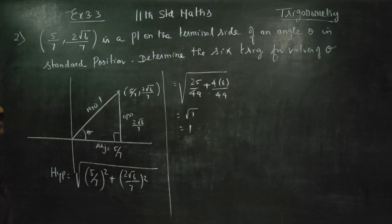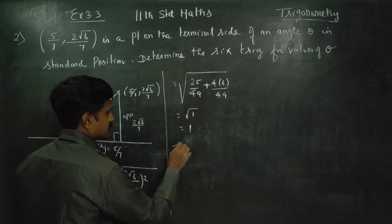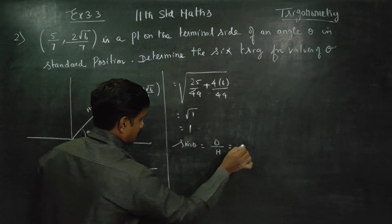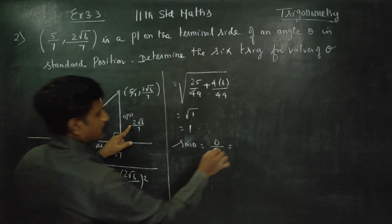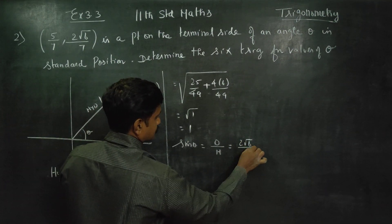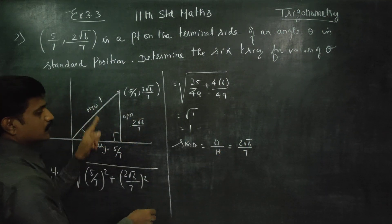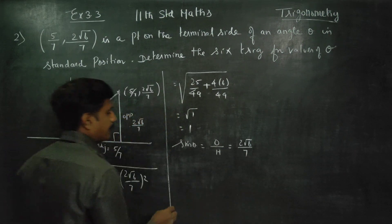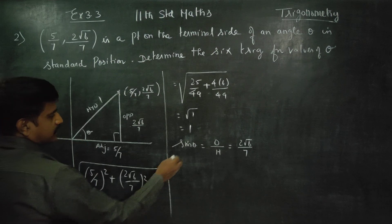Now hypotenuse is 1. For trigonometric ratios, first is sin theta. What is sin theta? Opposite by hypotenuse. My opposite is 2 root 6 by 7. Hypotenuse is 1, so sin theta is 2 root 6 by 7.